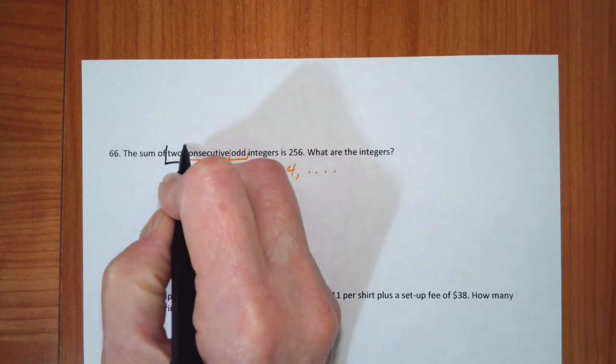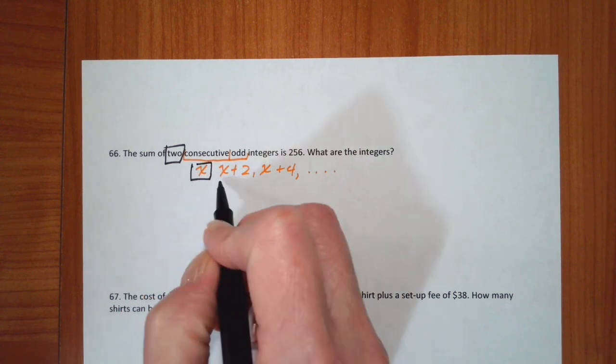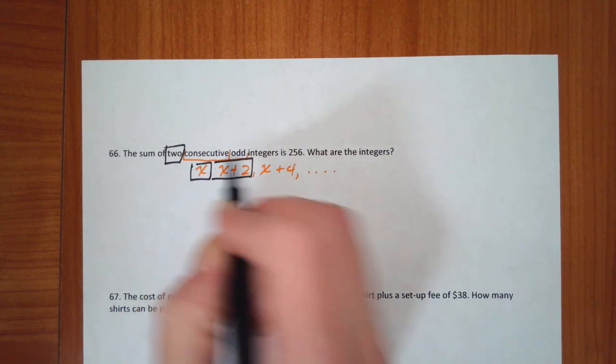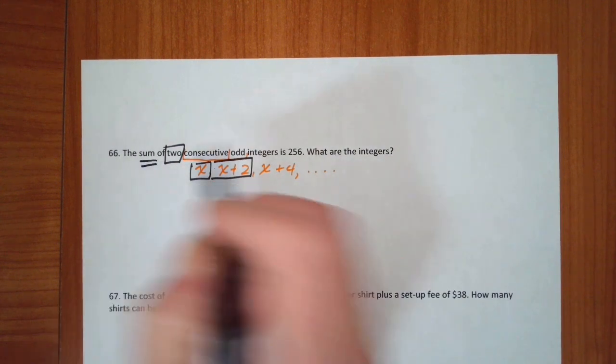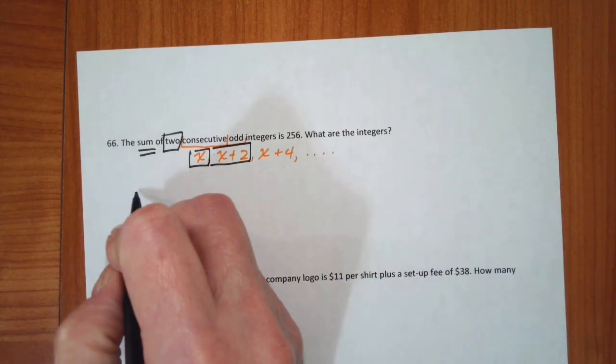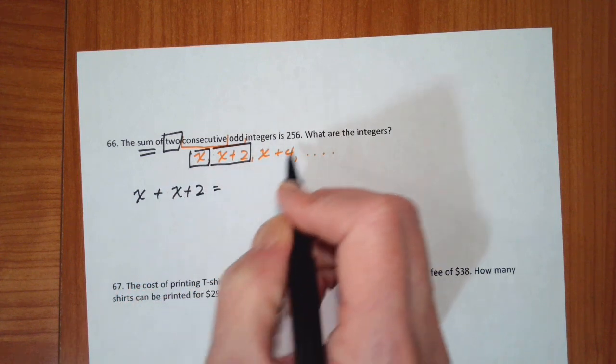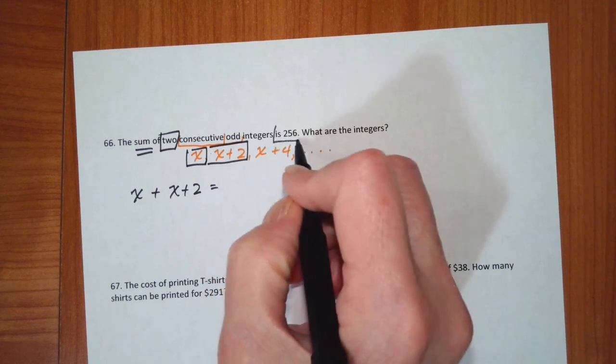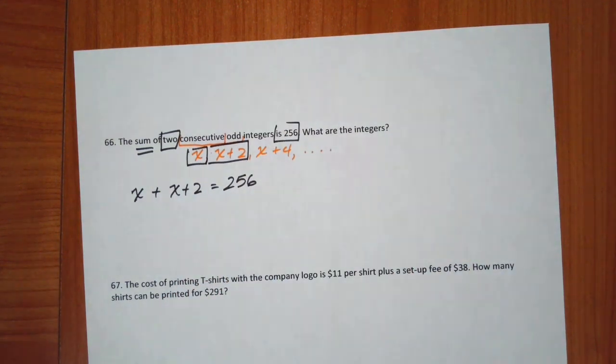So I'm only dealing with two of them. So that means I'm going to be looking at x and at x plus 2. And then it tells me the sum. So I know x plus x plus 2 is 256.